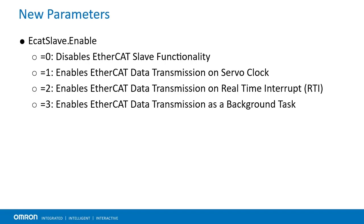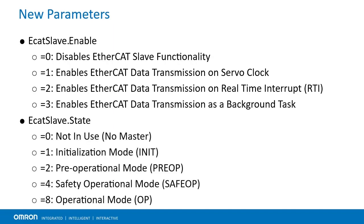A value of 3 means data transmission occurs asynchronously, not at a fixed frequency. Users will typically want to set this parameter in a header file in their project so that it is always on if they intend to use this feature. The next parameter is ECATSlave.State, which displays the current EtherCAT state of the device. A value of 0 means not connected or no master detected; 1 means initialization mode; 2 means pre-operational mode; 4 means safety operational mode; and 8 means operational mode.